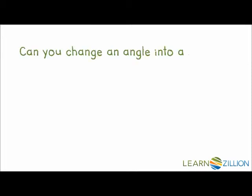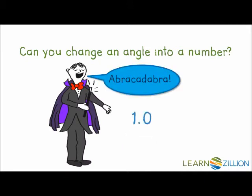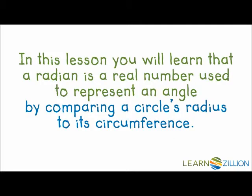Can you change an angle into a number? Abracadabra. Hmm. In this lesson, you will learn that a radian is a real number used to represent an angle by comparing a circle's radius to its circumference.